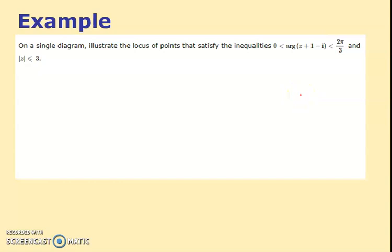This is the last example. On a single diagram, illustrate the locus of points that satisfy these inequalities. It says the argument is between 0 and 2π by 3. π by 3 is 60, so this is 120 degrees—it's actually quite a big angle. If I write that as the argument of z minus, minus 1 plus i, I think that's going to be at (-1,1). And at that point, this is my 0 angle, and this is my 2π by 3 angle, and it's anywhere in between there.